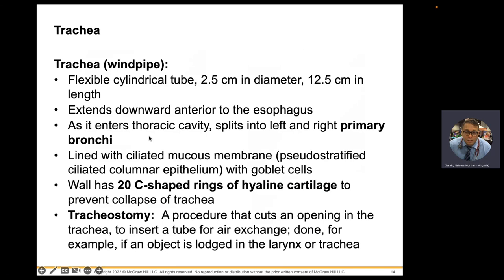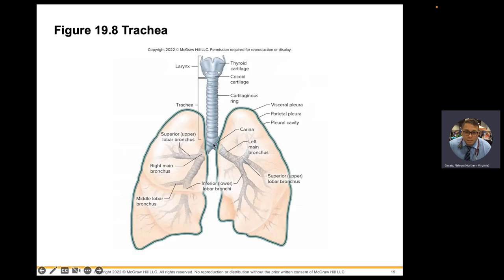The trachea is your windpipe with C-shaped cartilaginous rings. They split at a bifurcation called the carina into the right and left main stem bronchus. The right is more vertically located, making the right lung more prone to foreign body aspiration. The right lung has three lobes; the left has two and a cardiac notch. As the airways get smaller into bronchioles, cartilage disappears and gives way to smooth muscle.